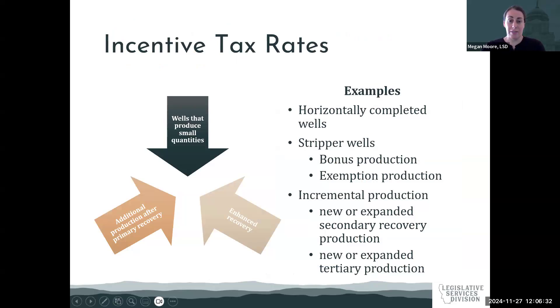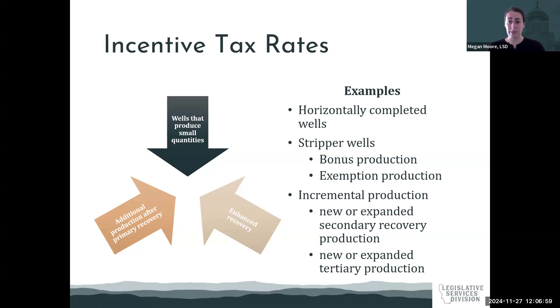There are a number of additional incentive tax rates contained in 15-36-304, for things like wells that produce small quantities — referred to as stripper wells — for enhanced recovery, or for additional production after primary recovery. Examples include horizontally completed wells, stripper wells taxed differently based on whether it's bonus production or exemption production, and incremental production including newer expanded secondary recovery and tertiary production. For these incentive tax rates, the rate varies based on quantity of oil produced or how long the well has been in production, often with a higher rate after 12 or 18 months. That's all on oil and gas taxation; I'll turn it over to Joe to go through the library and interactive tool.